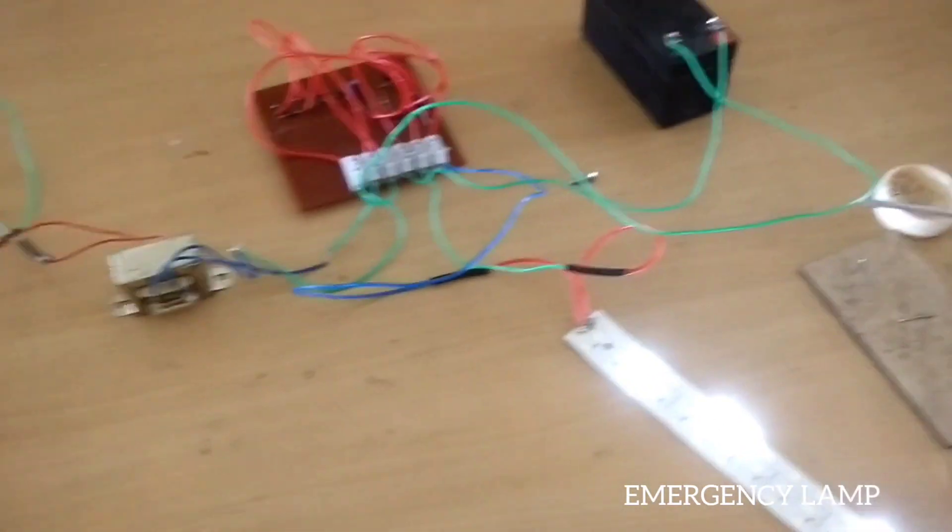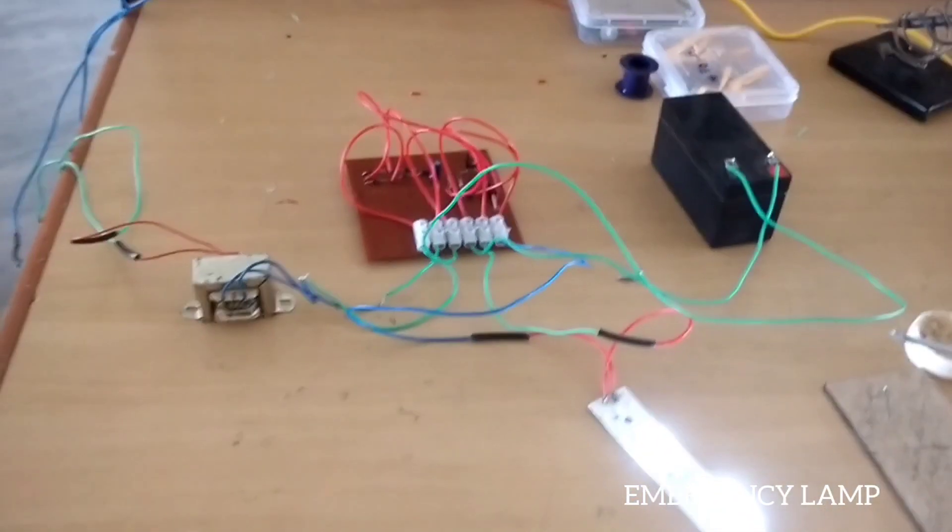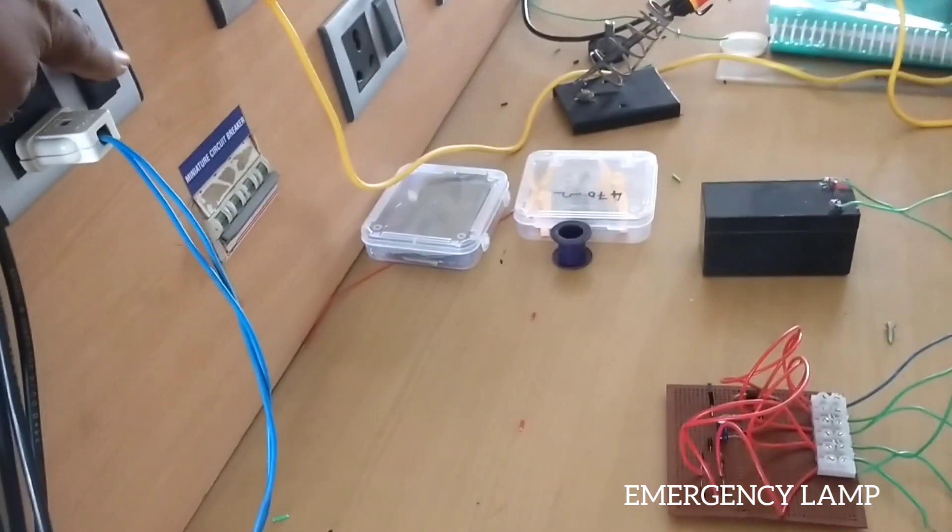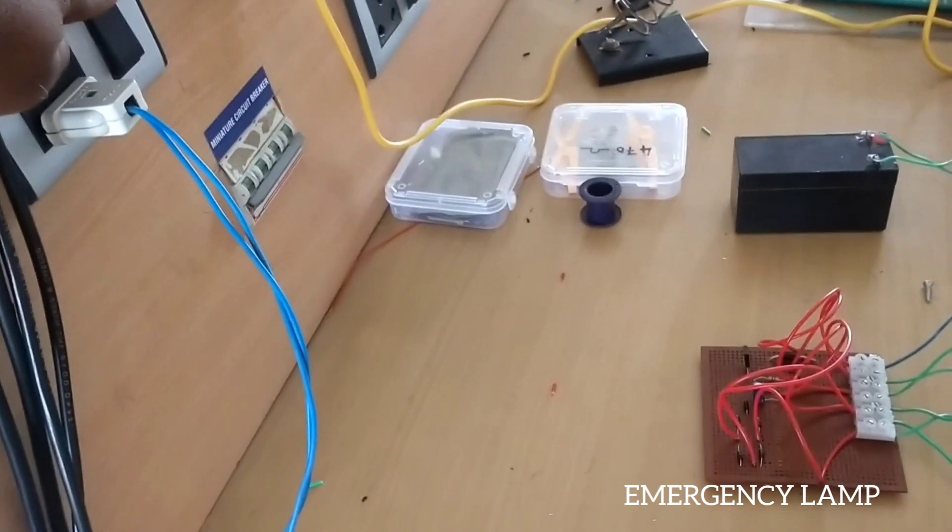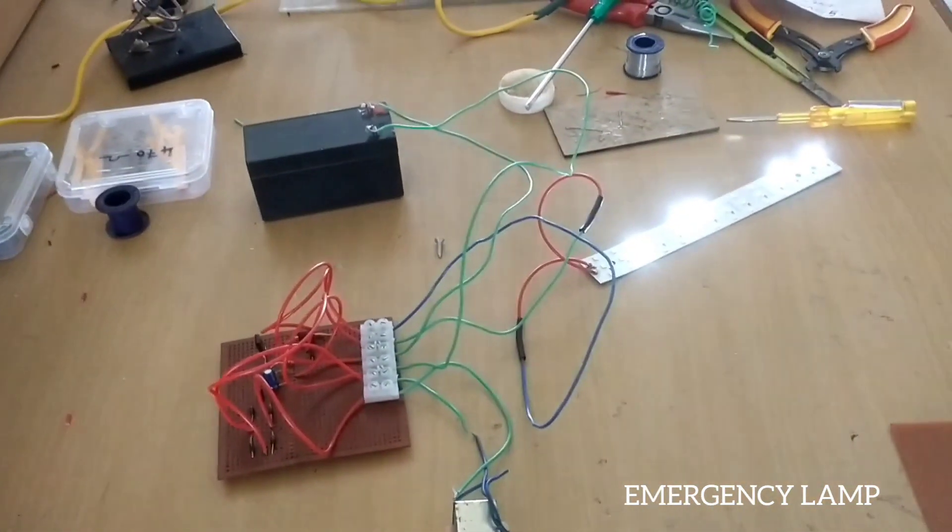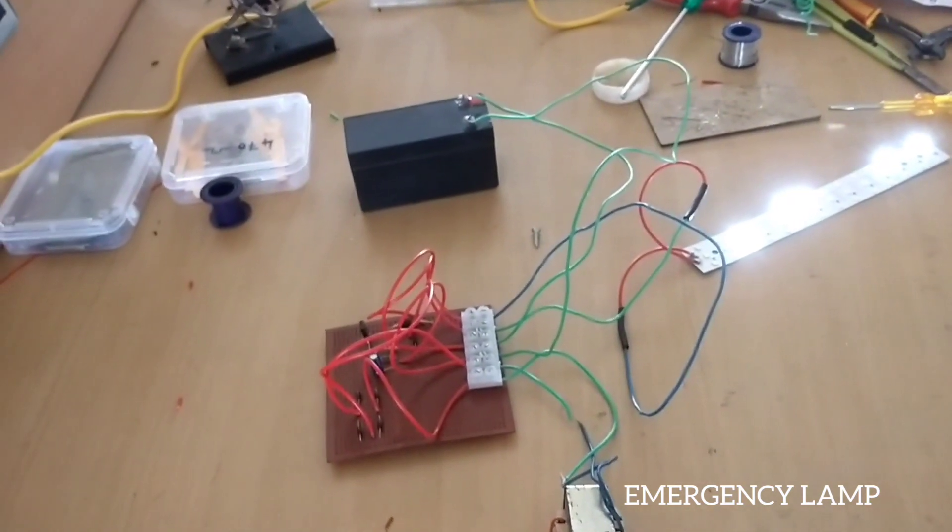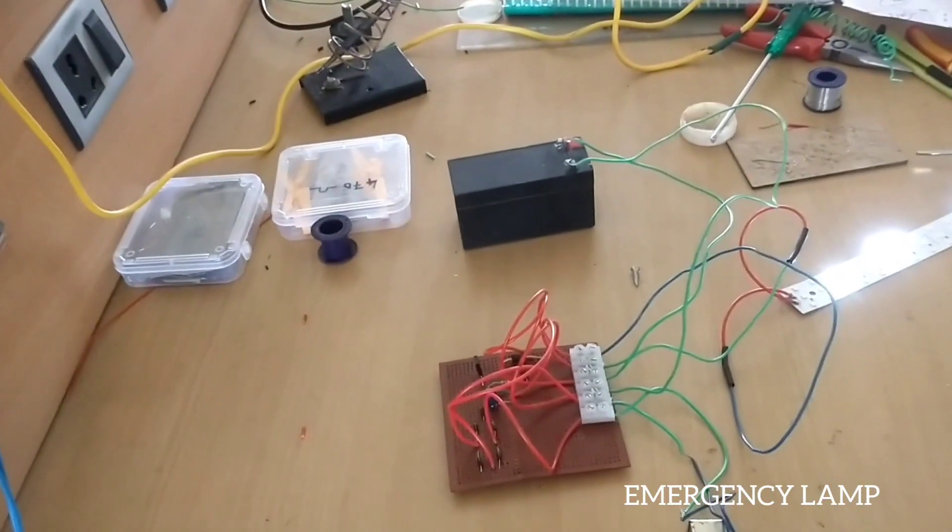According to the circuit diagram I have downloaded from Google, I have finished this. Now you can see when I am switching ON, now it is switching off. So the LEDs glow if there is no current. The LED glows when the power is off. See, switching on, you can see.